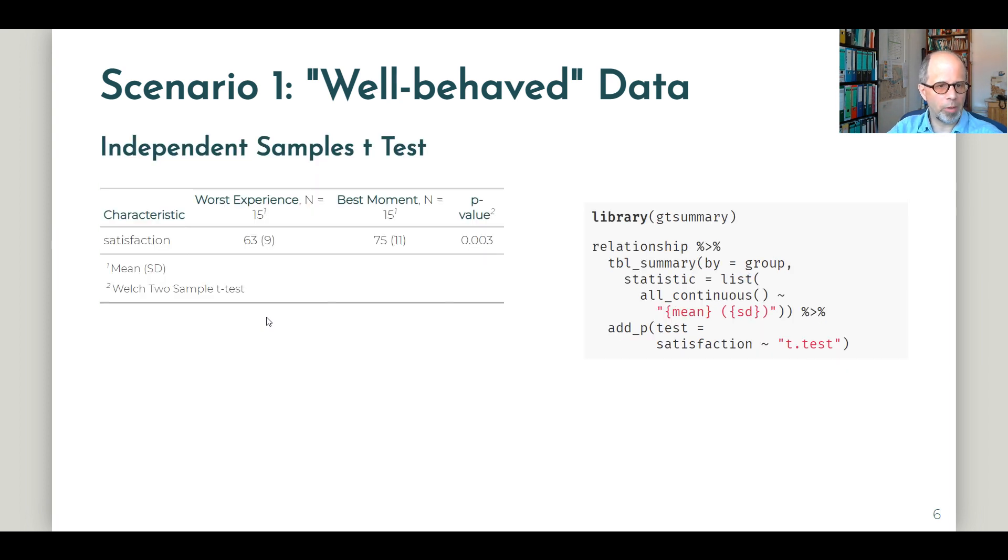We start with the independent samples t-test, and I'm using the gtsummary package here to display results in a publication-ready format. The Welch correction has been applied, even though it may not have much of an influence here because the data are so well-behaved, or normally distributed. The p-value is clearly significant, so we can conclude that the group that was made to think of the best moment is statistically more satisfied with their relationship than the group that was made to think of their worst experience. Note that I changed the default in the gtsummary function to display means and standard deviations which are well in accordance with the t-test.